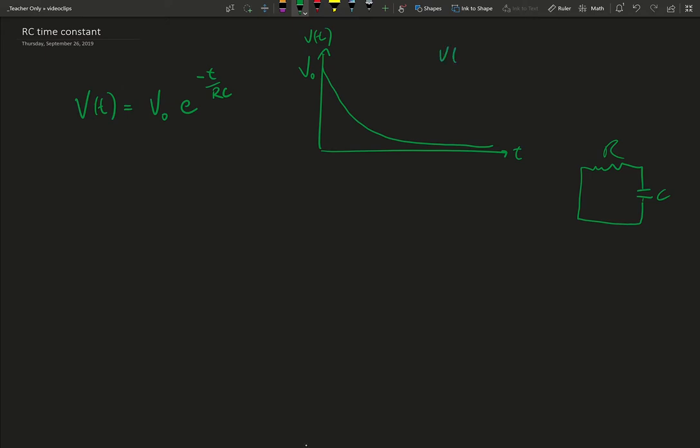If we remember, V at t equals 0 is the same as saying V naught times e to the 0, and anything times e to the 0 is just itself, because e to the 0 is 1. It's this special number e that's very useful across so many areas of science, physics, biology. It's a number that describes so much of the natural world. I think it's a lot cooler than pi.